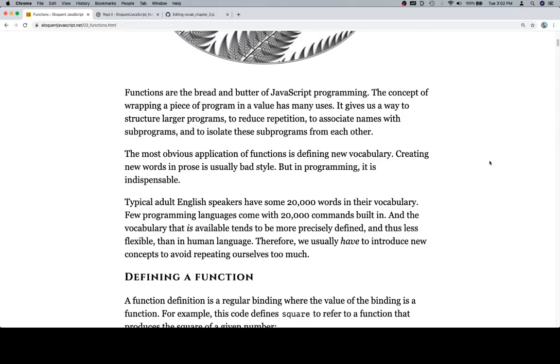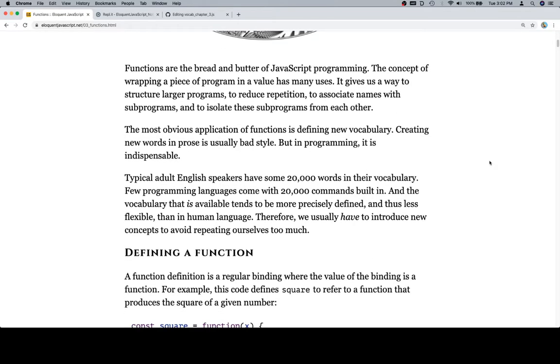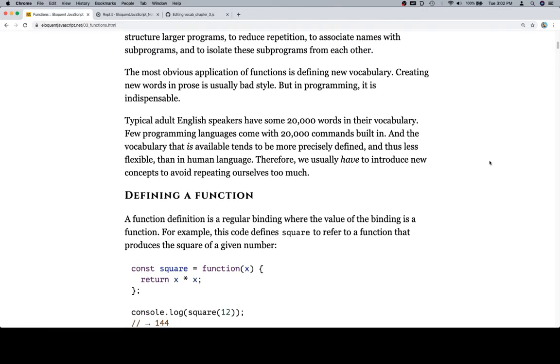The most obvious application of functions is defining new vocabulary. Creating new words in prose is usually bad style, but in programming it is indispensable. Typical adult English speakers have some 20,000 words in their vocabulary. Few programming languages come with 20,000 commands built in. And the vocabulary that is available tends to be more precisely defined, and thus less flexible than in human language. Therefore, we usually have to introduce new concepts to avoid repeating ourselves too much.